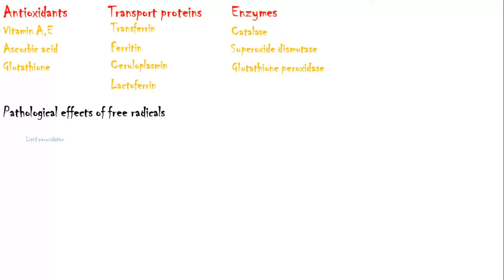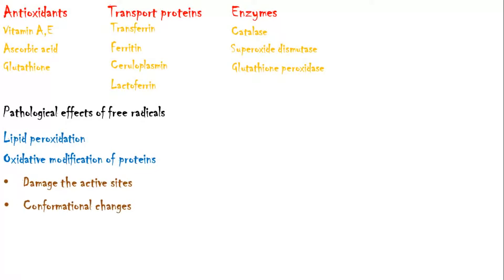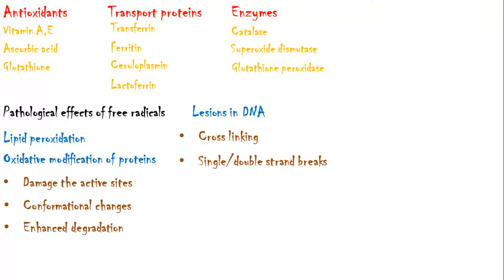Pathological effects of free radicals include lipid peroxidation, oxidative modification of proteins by damaging the active sites of enzymes, causing structural changes and enhancing their degradation. Free radicals also cause lesions in DNA by forming cross-links between strands and causing single and double strand breaks.